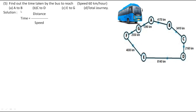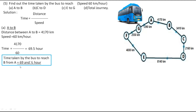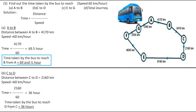First we will take A to B. The distance is 4170 km and speed is 60 km/hr. So time = 4170 / 60, which gives 69.5 hours. So the time taken by the bus to reach B from A is 69.5 hours. Next is C to D: the distance is 2160 km and speed is 60 km/hr. Time = 2160 / 60, which gives 36 hours. So the time taken by the bus to reach D from C is 36 hours.